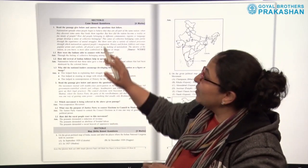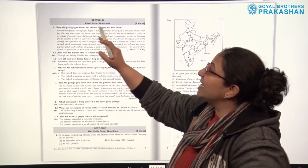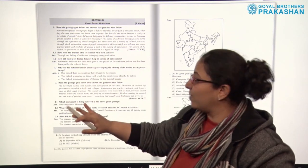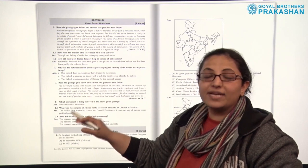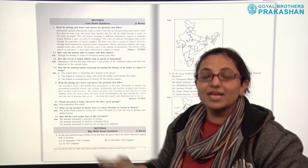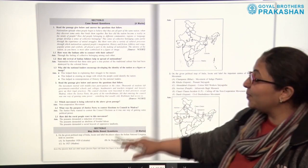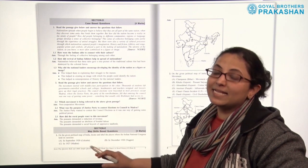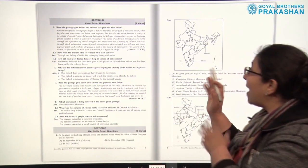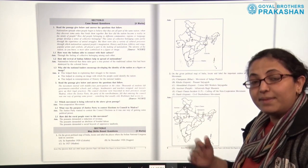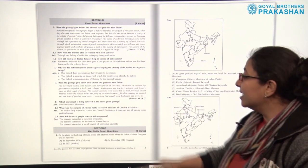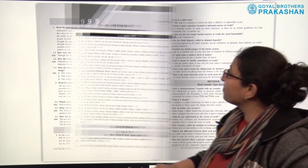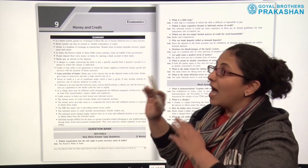After that, we have section D, which is case study based questions. These are case-based questions and answers are provided along with the questions. After that, we have section E, which is map skills based questions, and the maps are solved as well.